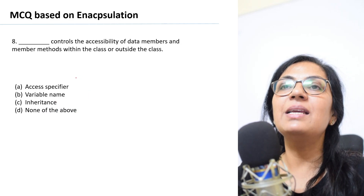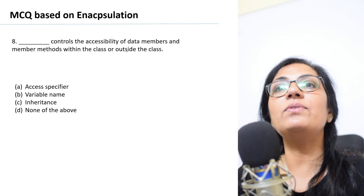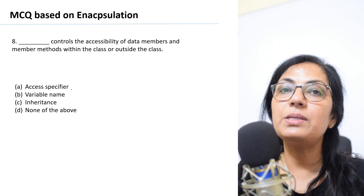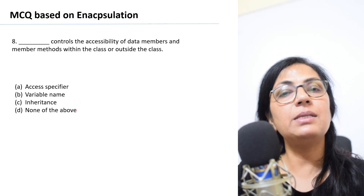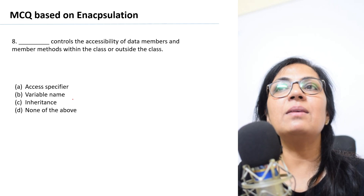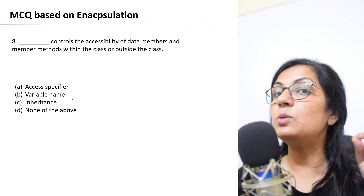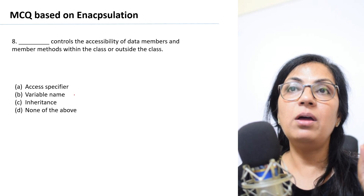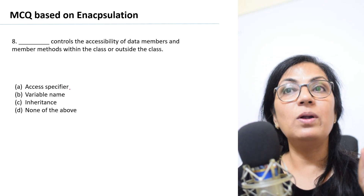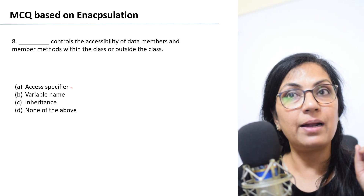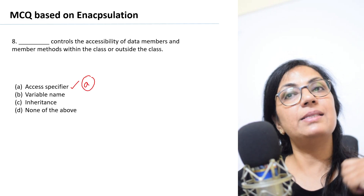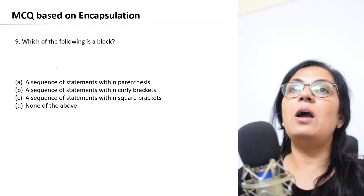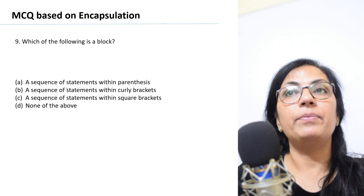Question number eight: Blank controls the accessibility of data members and member methods within the class or outside the class. The options are access specifier, variable name, inheritance, or none of the above. We write private, public, or protected before the member method or data member name — these are the access specifiers. So the correct answer is option A: access specifier.